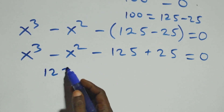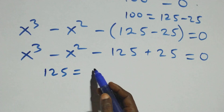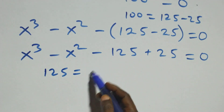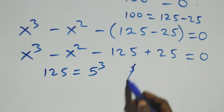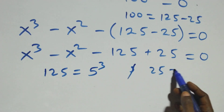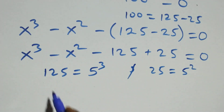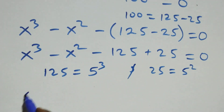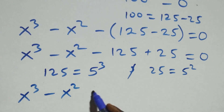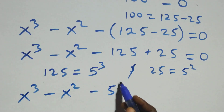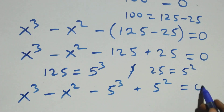We can write 125 as 5 times 5 times 5, which is 5 cube, and also 25 as 5 times 5, which is 5 square. So this equation becomes x cube minus x square minus 5 cube plus 5 square equals to 0.